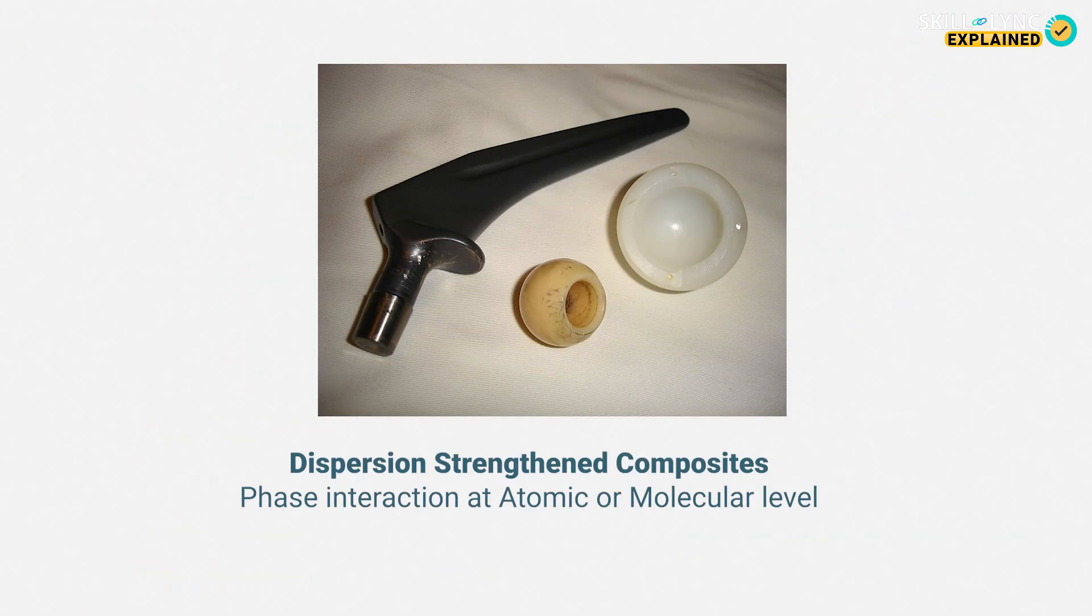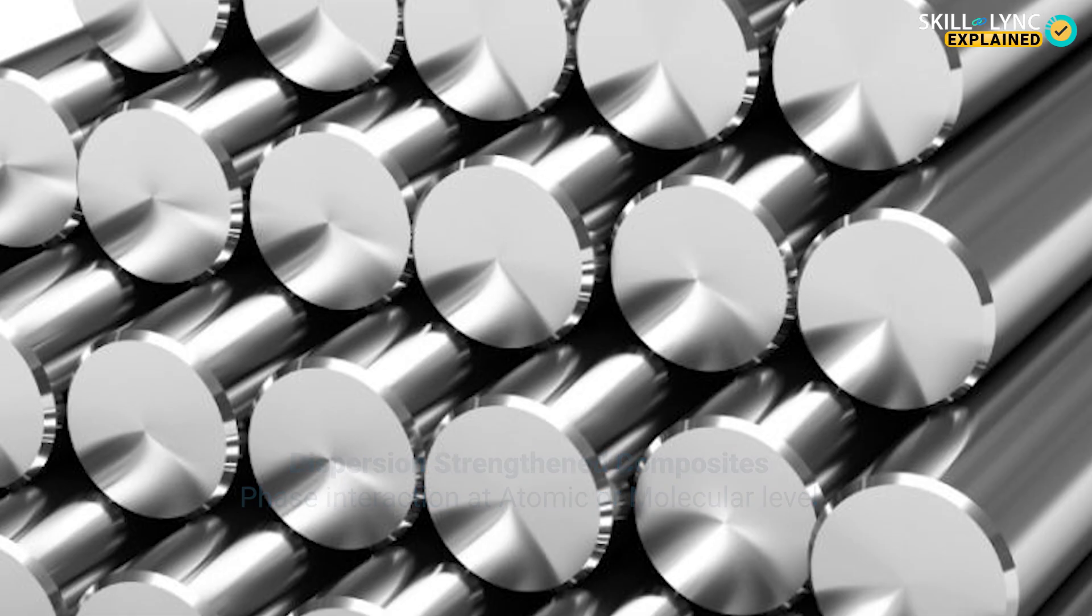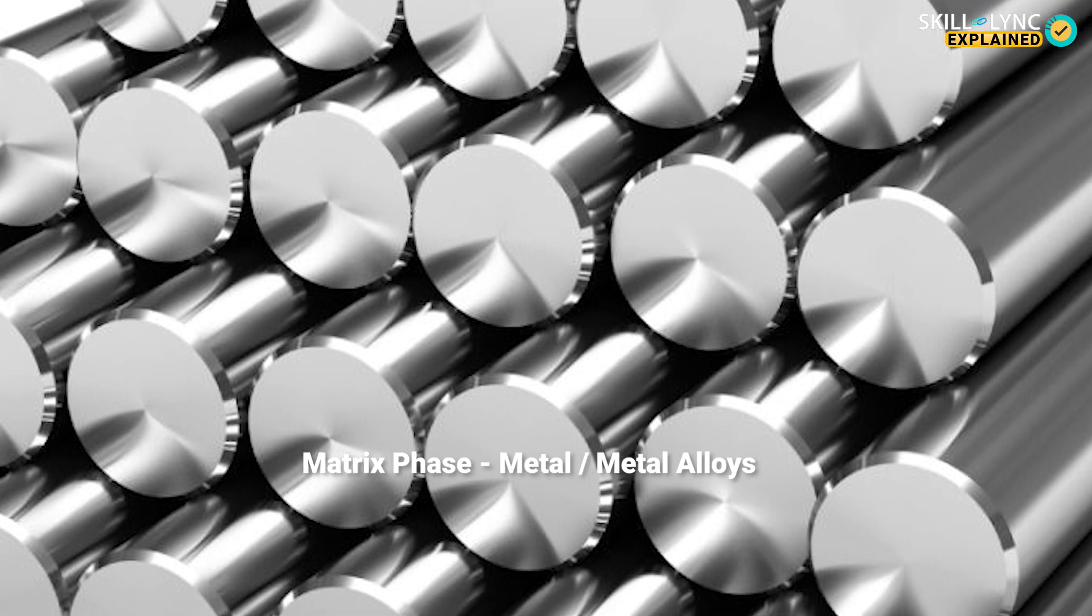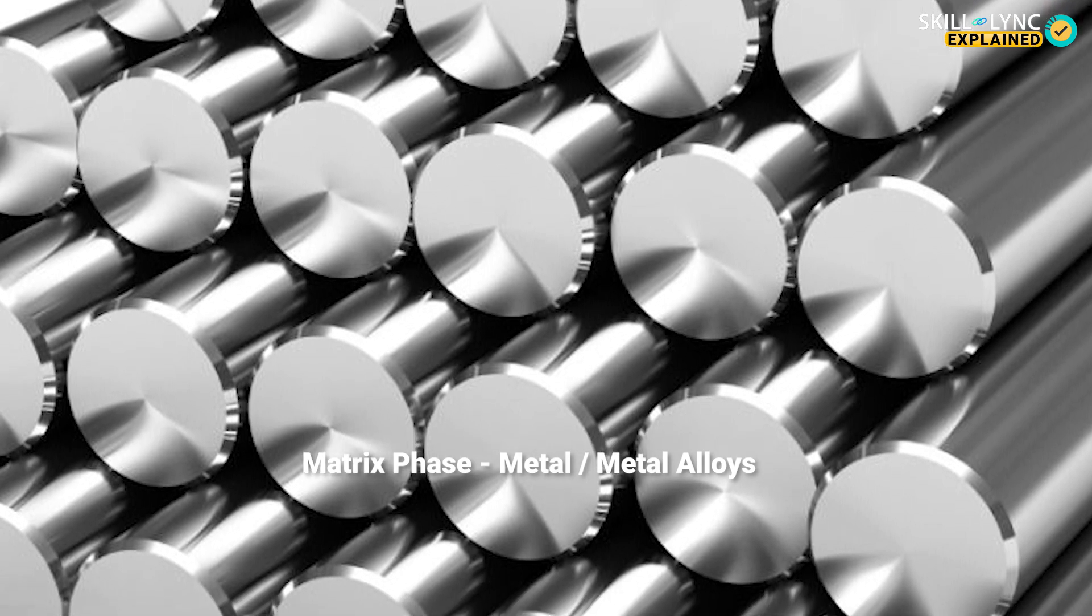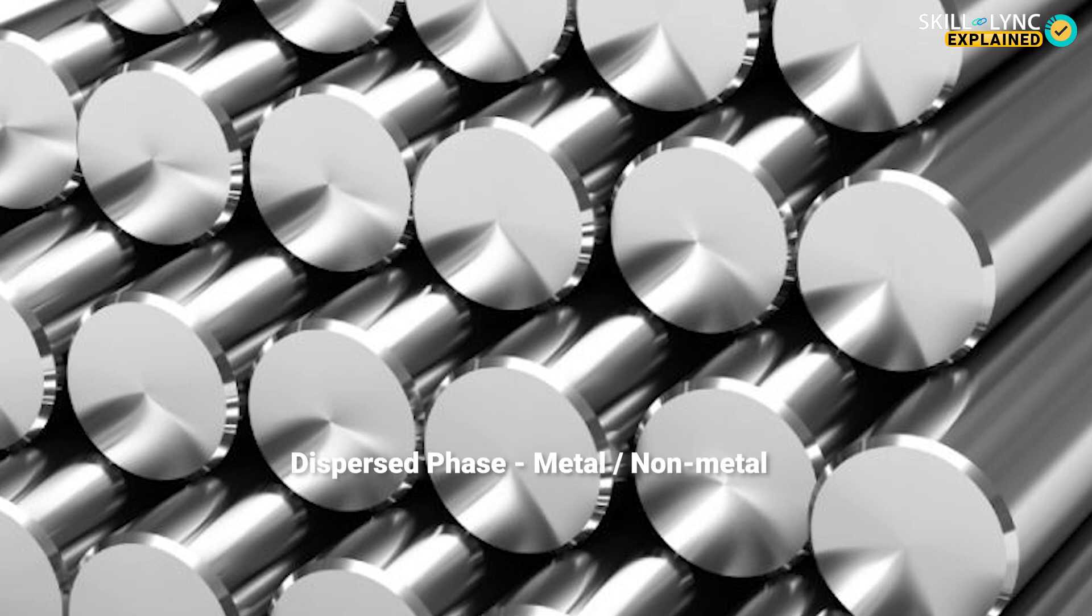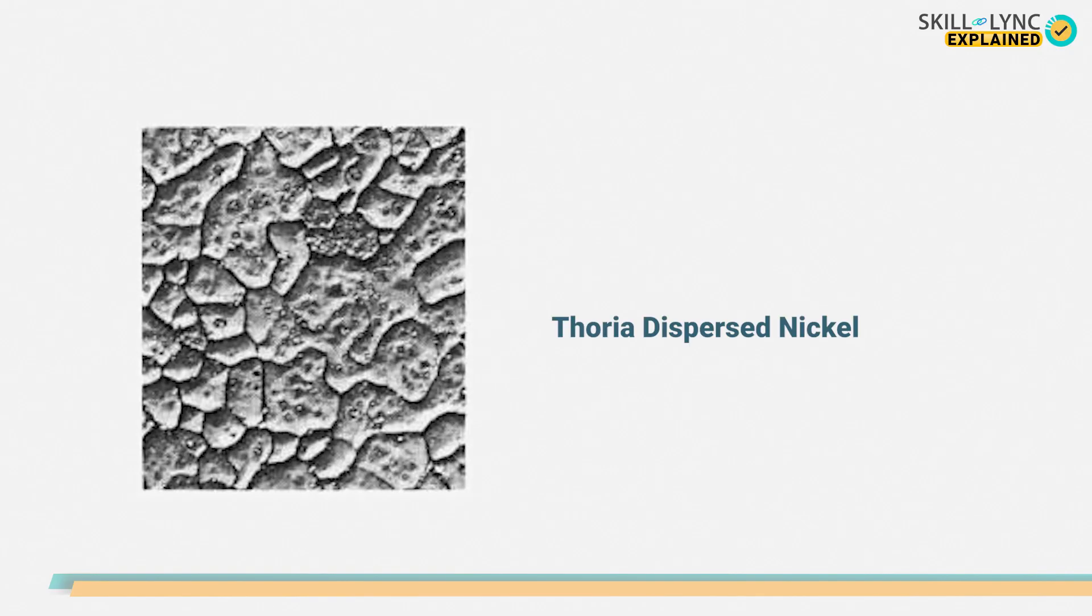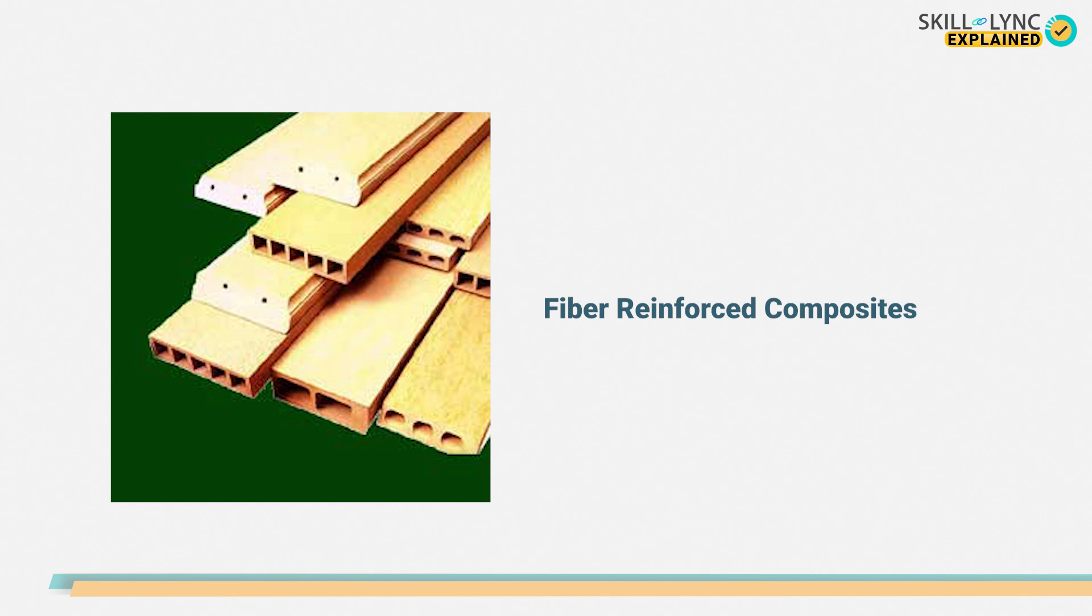When it comes to dispersion strengthened composites, the phase interaction takes place at the atomic or molecular level. Here, a certain volume of fine material is added to a hard or strong material like metals and metal alloys. The dispersed phase can either be metal or non-metal. An example of this type of composites is thoria dispersed nickel. It's a type of nickel alloy that has three percent of thoria in it.